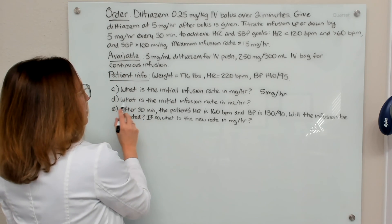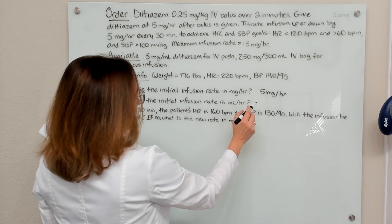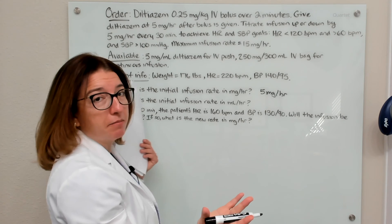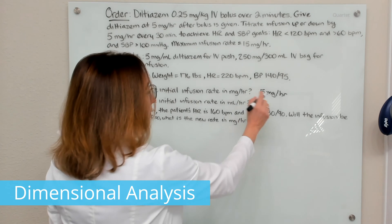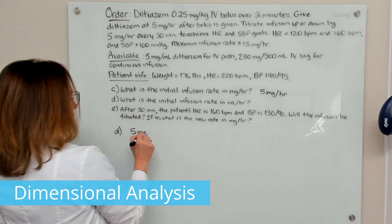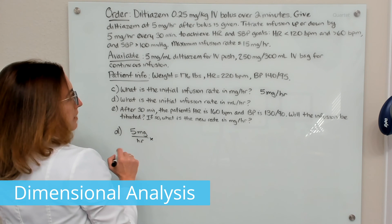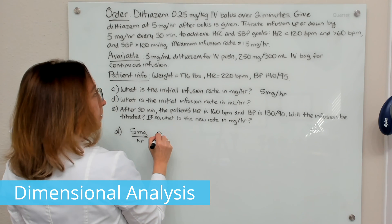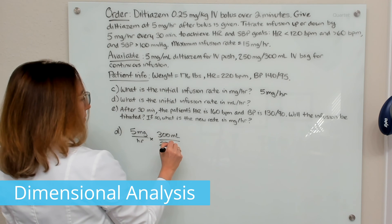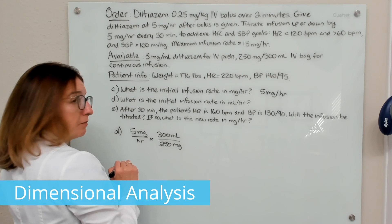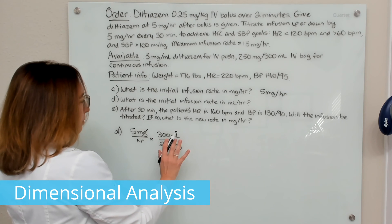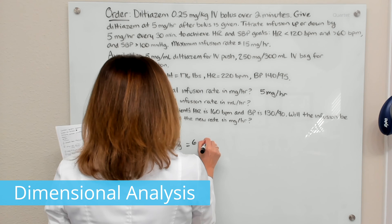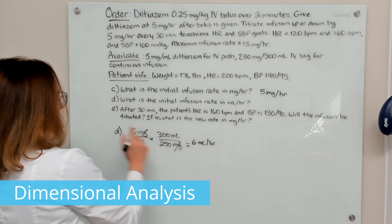Part D asks what is the initial infusion rate in milliliters per hour. Dimensional analysis is the most straightforward method. We take our initial infusion rate of 5 milligrams per hour and multiply by the available concentration of diltiazem for the continuous infusion — 300 milliliters over 250 milligrams — purposely putting milliliters on top and milligrams on the bottom so milligrams cancel. Multiplying this out gives us 6 milliliters per hour.